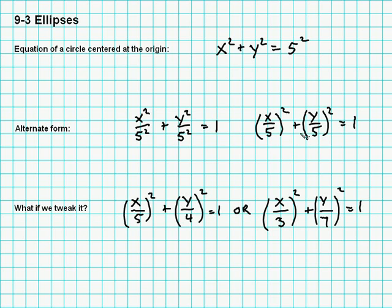But what if we want to stretch the circle? Now that we have the radius split up into how it affects x and how it affects y, what if we change it? So here's x over five squared and here's y over four squared. It looks reasonable that this might make the y radius different than the x radius, which is sort of what we want to do when we get an ellipse. Here's another possibility.